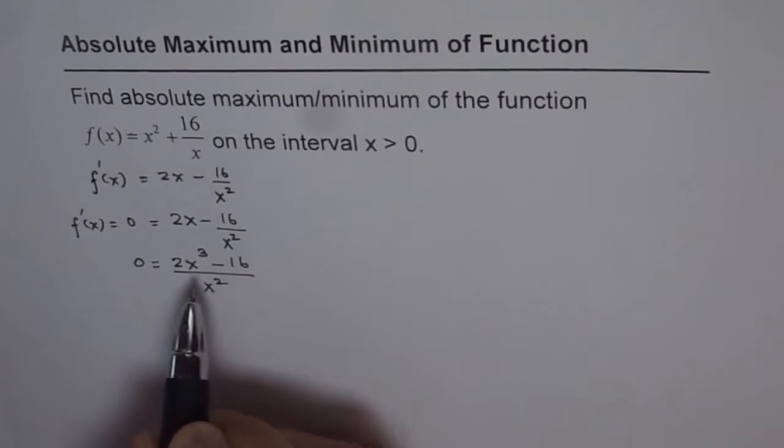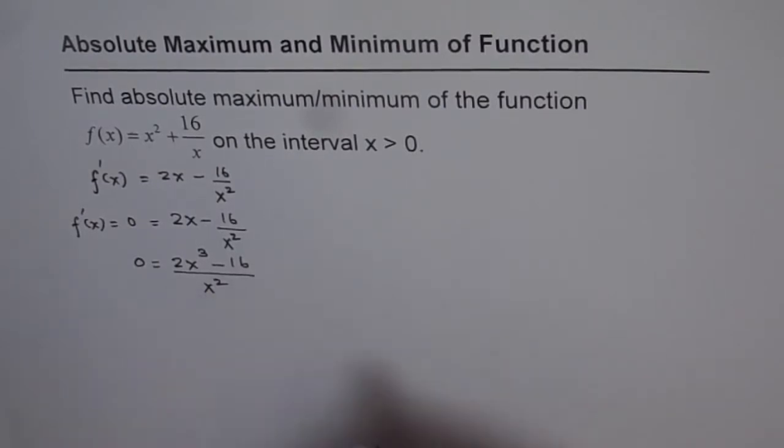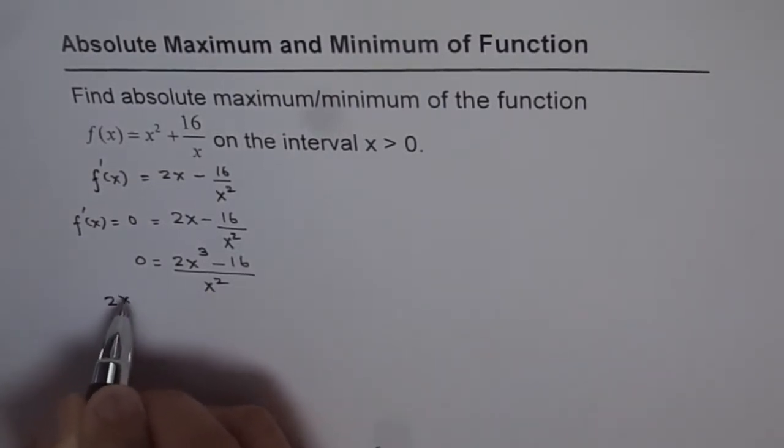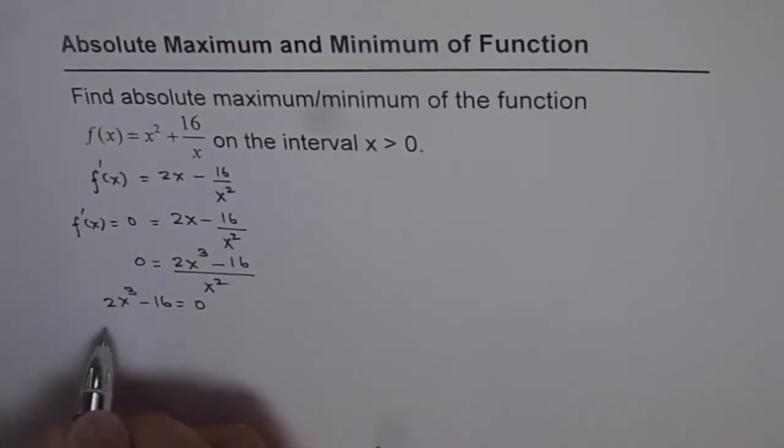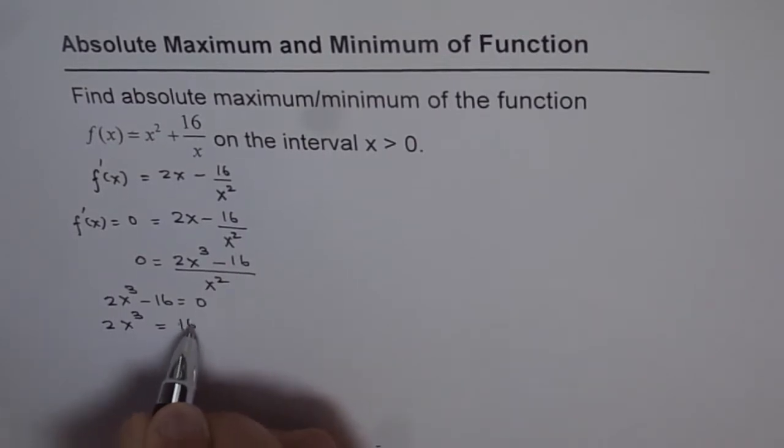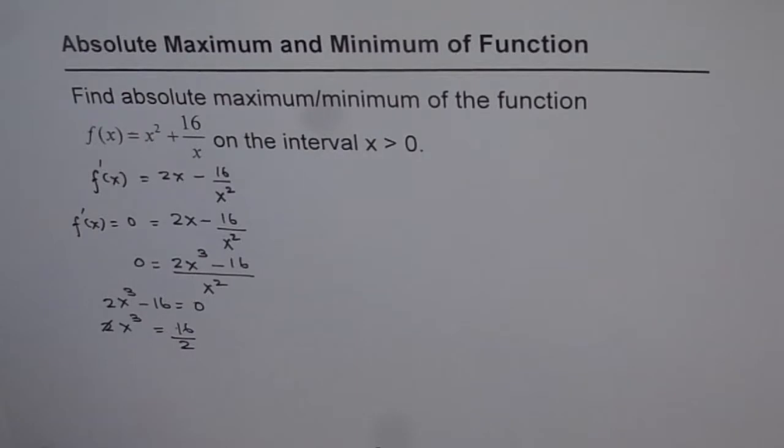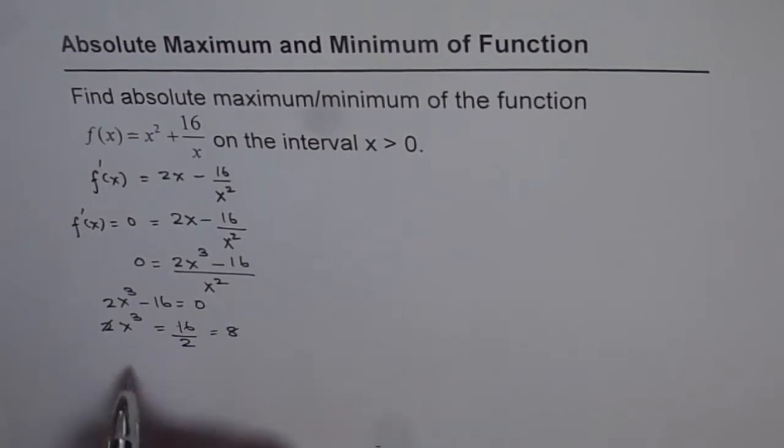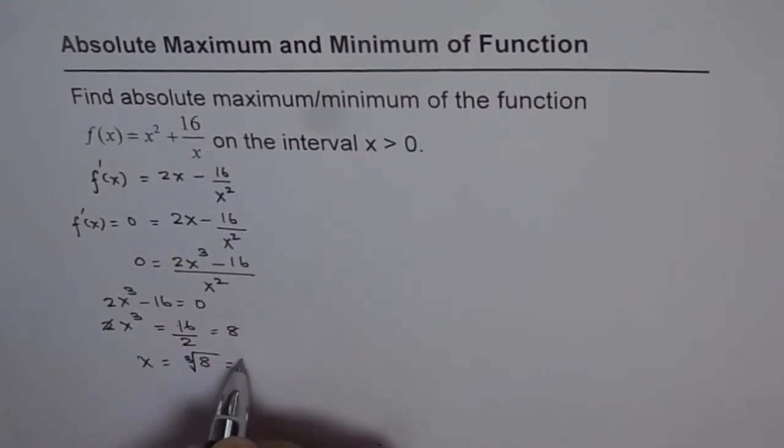Now this can be 0 if the numerator is 0. So we'll solve for numerator which is 2x³ - 16 = 0. That gives us 2x³ = 16, and dividing by 2 both sides, we get x³ = 8. So x is the cube root of 8, which is 2.